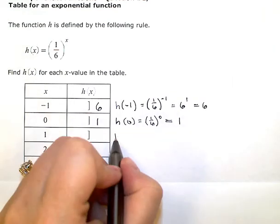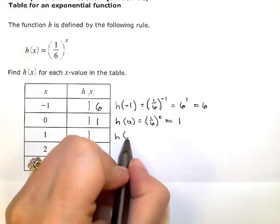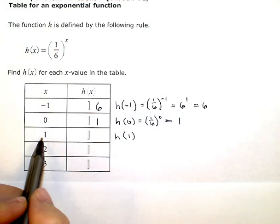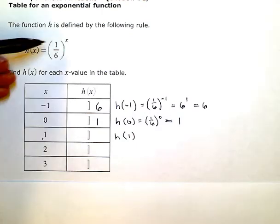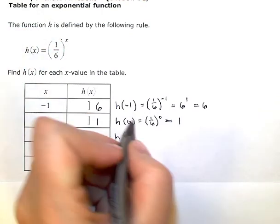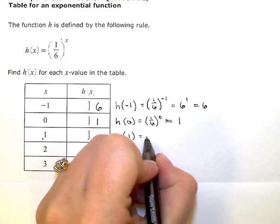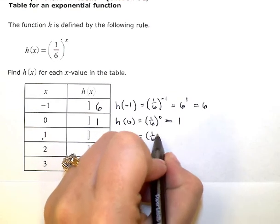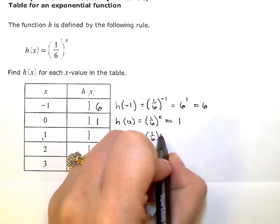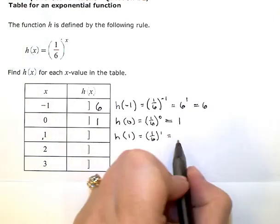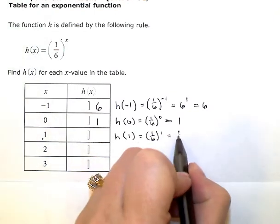h evaluated at 1 — we substitute 1 in for x, giving us 1 sixth to the 1st power. Anything to the 1st power is just itself, so this is 1 sixth.